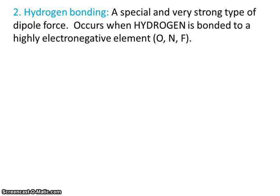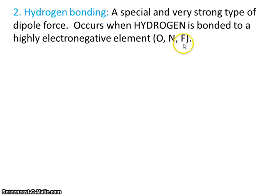The second type of IMF we're going to study is called hydrogen bonding. Hydrogen bonding is a special and very strong type of dipole force. It occurs when hydrogen is bonded to a highly electronegative element — either oxygen, nitrogen, or fluorine. We'll see hydrogen bonding take place when a molecule has hydrogen bonded to oxygen, nitrogen, or fluorine.